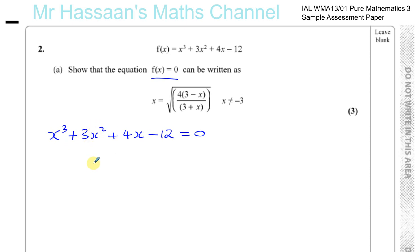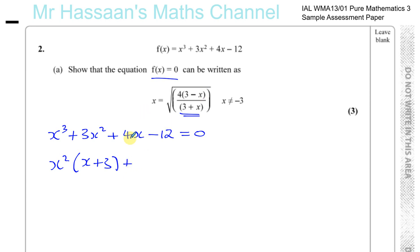So you've got x squared times (x plus 3), which looks like we're on the right track. Then we take out a common factor of 4, giving 4 times (x minus 3) equals 0, which is in the same kind of form as what we need.